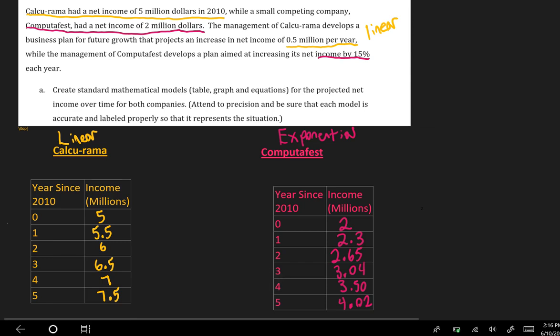The rule that I used to fill in the table for Calcurama was a recursive rule. So I was looking at, let's use t for years, and I'm going to use i for income. So we were looking at i sub t equals i sub t minus 1 plus 0.5. And that was starting from i sub 0 being 5.